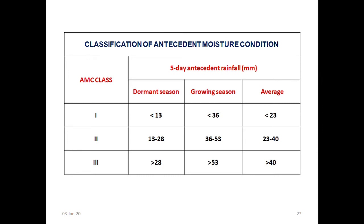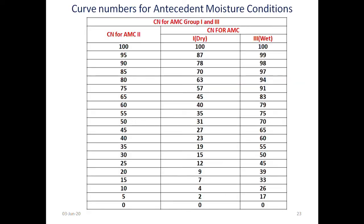Antecedent moisture content. This is the five-day antecedent rainfall which is categorized into three seasons: dormant season, growing season, and the average one. Average is the curve number two, dormant season is curve number one, growing season is curve number three. Like this we will have curve number one, curve number two, curve number three are classified and based on this we will give the rankings of curve numbers. According to these antecedent moisture conditions, curve number two is prepared.